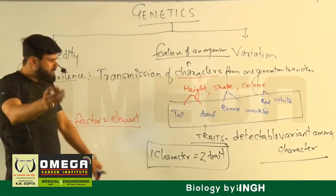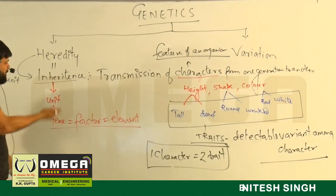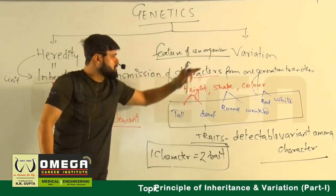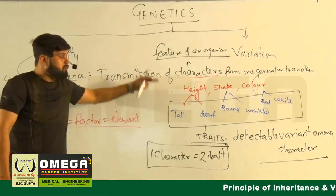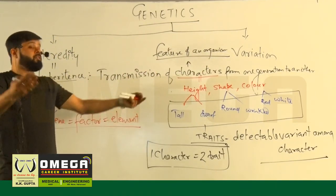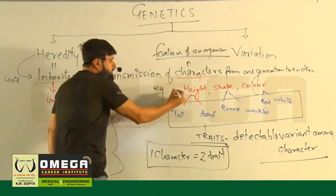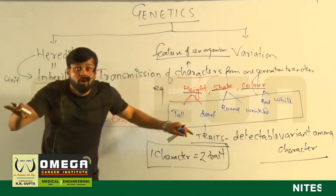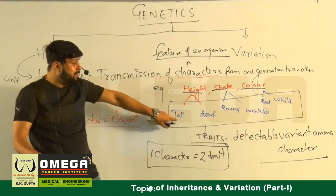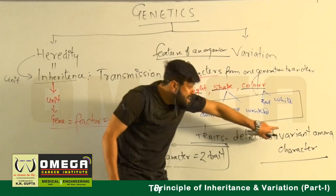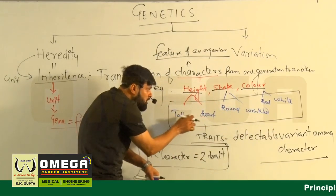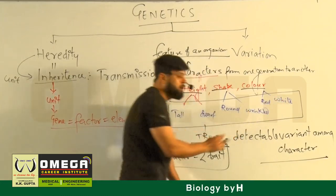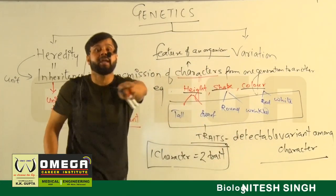So to recap: what do you mean by inheritance? Transmission of characters from one generation to another. What do you mean by character? Feature of an organism — for example, height, shape, color. But these are not detectable on their own. Detectable variants among characters are called traits: tall or dwarf, round or wrinkled, red or white.